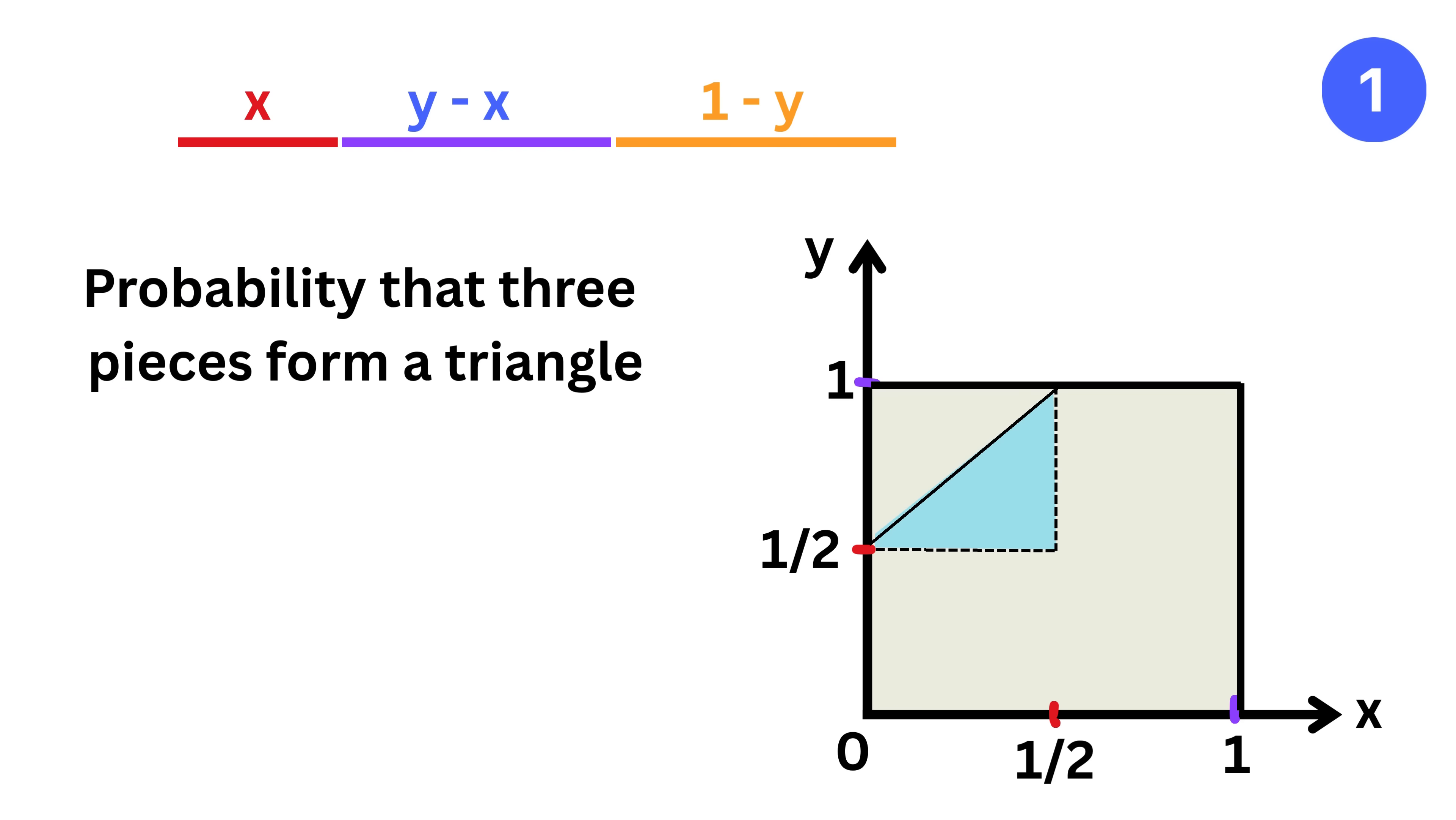Thus the probability that three pieces form a triangle under the assumption x is less than y is given by the area of the blue triangular region, which is one over eight.